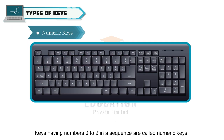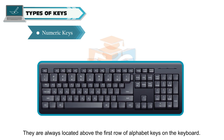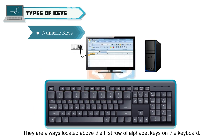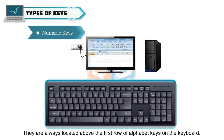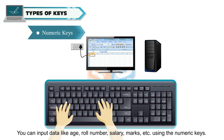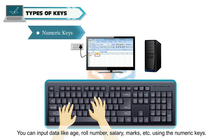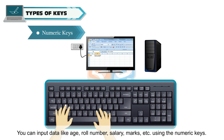Keys having numbers 0 to 9 in a sequence are called numeric keys. They are always located above the first row of alphabet keys on the keyboard. You can input data like age, roll number, salary, marks, etc. using the numeric keys.